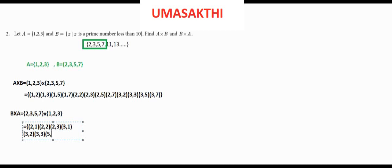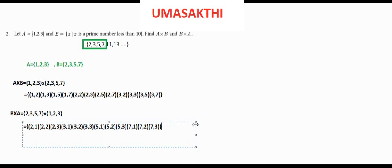Continuing B cross A: (5,1), (5,2), (5,3), (7,1), (7,2), (7,3). So A cross B and B cross A are different — the x-component and y-component are swapped. That's all, thank you.